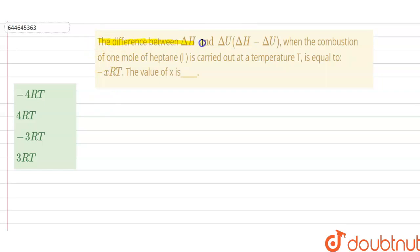The difference between delta H and delta U, that is delta H minus delta U, we have to find when the combustion of one mole of heptane is carried out at a temperature T and it is equal to minus x RT. So we have to find what the value of x is.